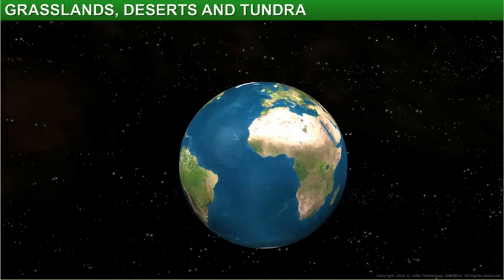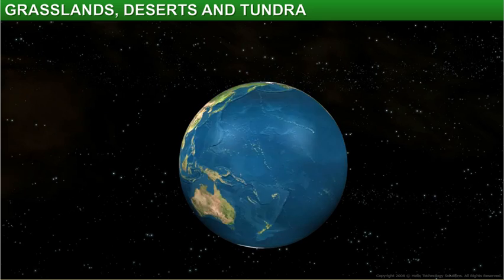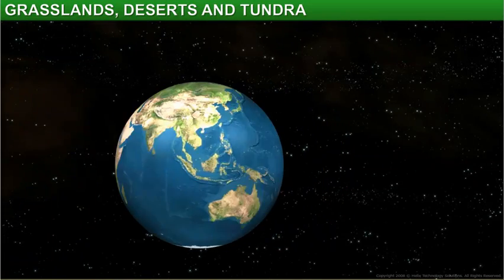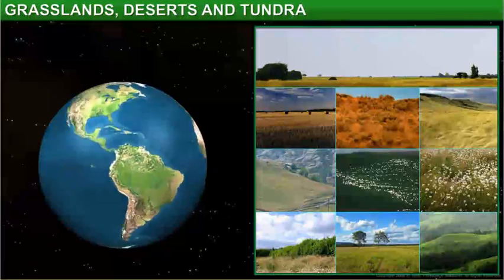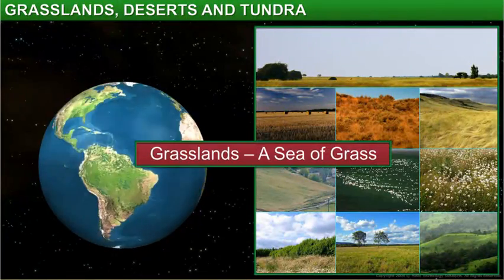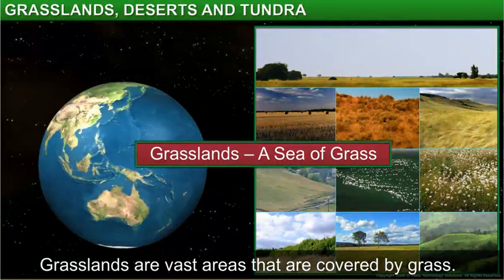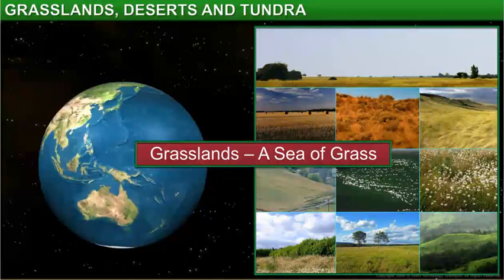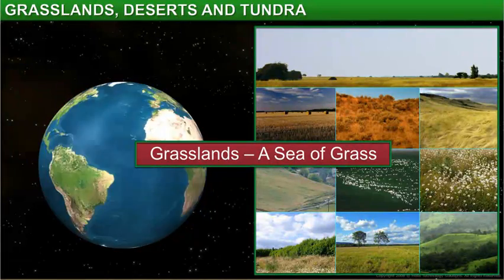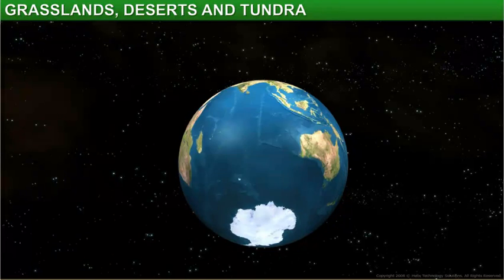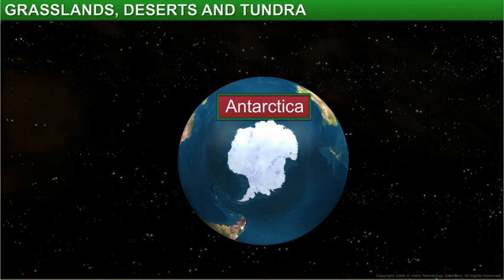If you look at the globe, almost one-fourth of its land is green. These areas represent the grasslands. Grasslands are vast open areas that are covered by grass. Not many trees and bushes can be found growing here. Except the continent of Antarctica, grasslands are found on every continent.